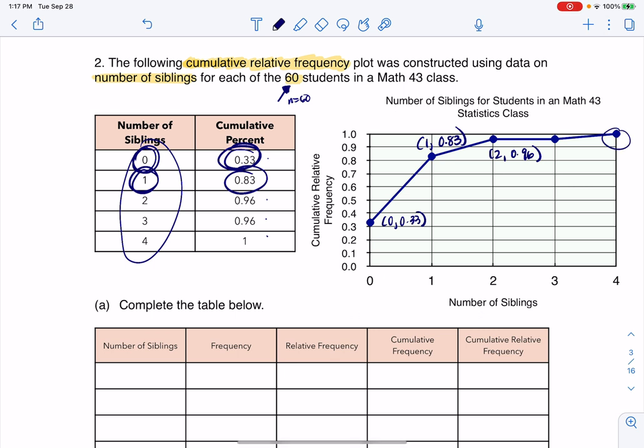And it does total out at one, which it should. Cumulative graphs should always go there. So I'm going to erase some of my scribbles just because it tends to get pretty crowded here. And let's take a look at what they're asking us to do. It looks like they want us to complete this table.